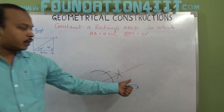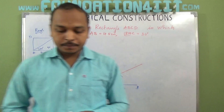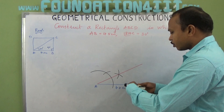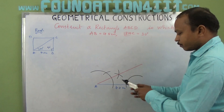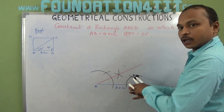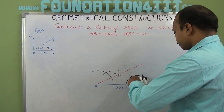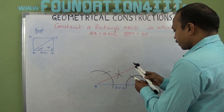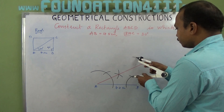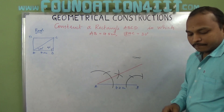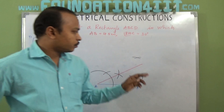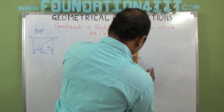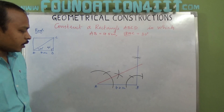Now at vertex B, the angle is 90 degree, which we need to construct. Draw an arc at B. Without changing this radius, draw an arc again. The marks at 0, 60, and 120 — if you bisect 60 and 120, this is bisecting perfectly, giving 90 degrees. Extend the line from B. So we got the point. Now angle B is 90 degree, so 90 degrees is constructed.